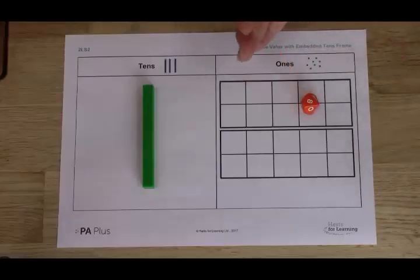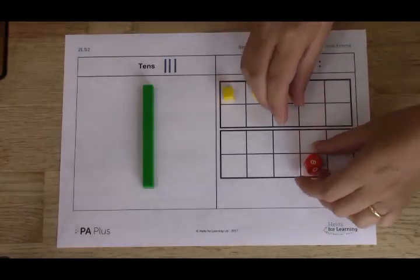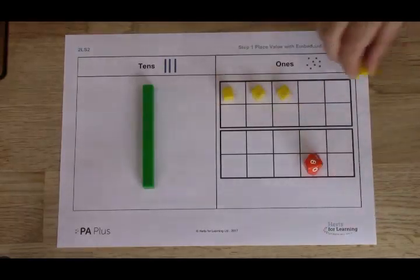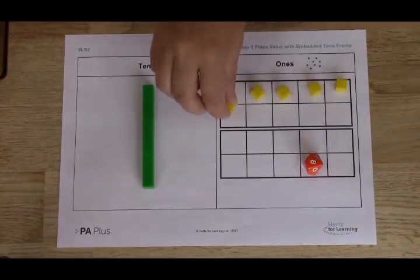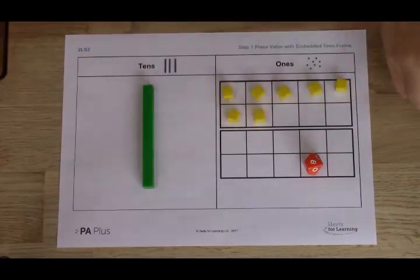Once the regrouping is done and has been explained continue to roll the dice adding to the total created so far. Keep rolling until you have at least 10 ones in the tens frames.